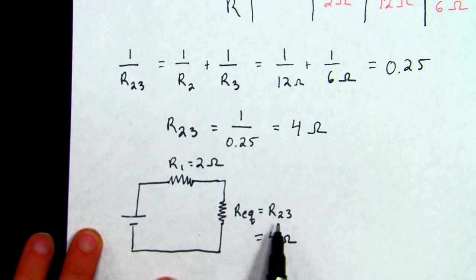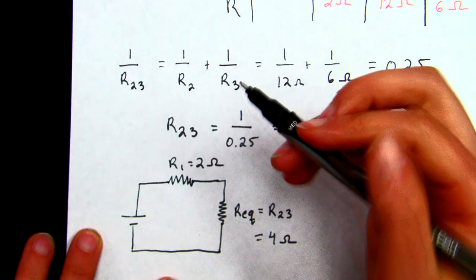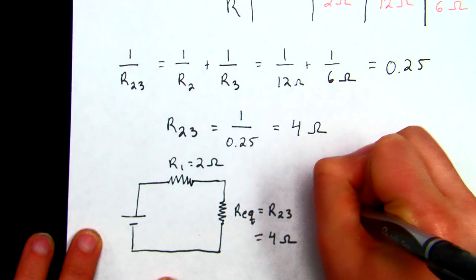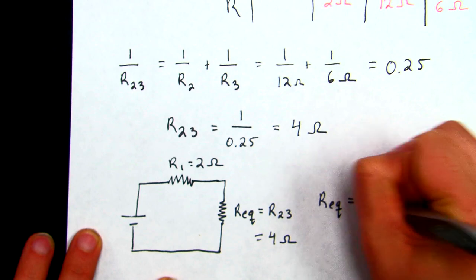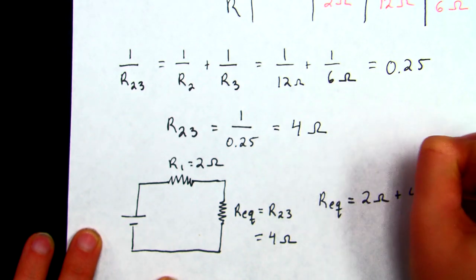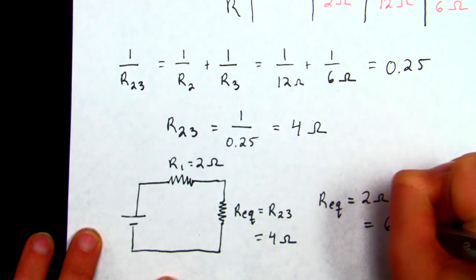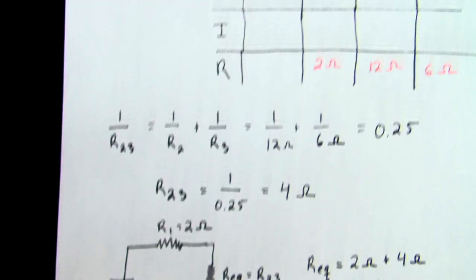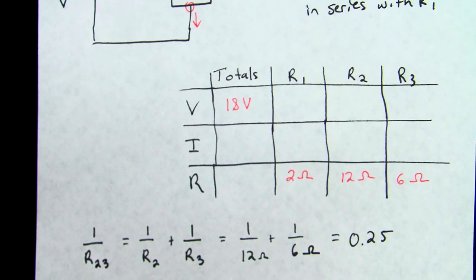So 2 and 3 are in series with 1, so we understand that if we're in series, we're going to follow that series rule, we're going to take 2 ohms plus 4 ohms to get a grand total of 6 ohms. And so once we've got our total resistance, we're going to go back to the chart and fill that in.